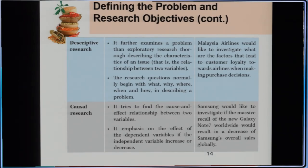The third type is causal research, which tries to find the cause-and-effect relationship between two variables. It emphasizes the effect of the independent variable if it increases or decreases. For example, Samsung would like to investigate if their massive recall of the new Galaxy Note 7 worldwide would result in a decrease of Samsung's overall sales globally. This is an example of causal research.